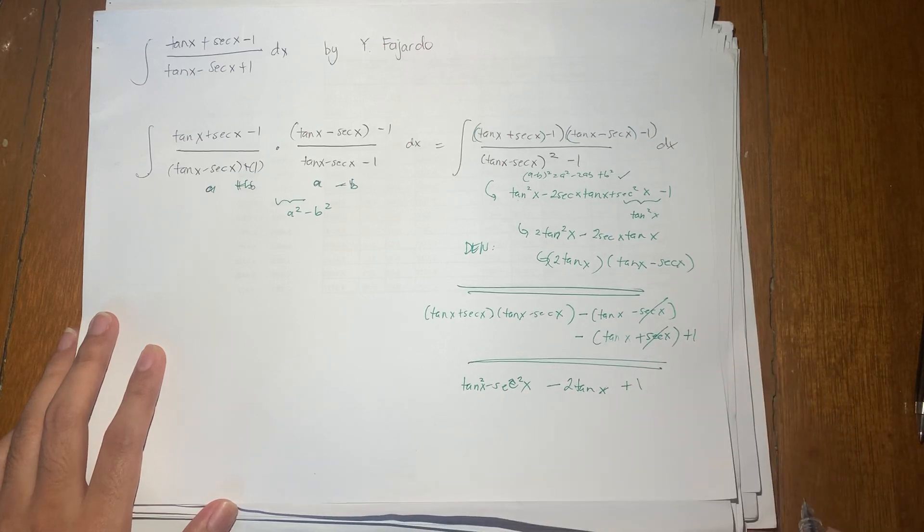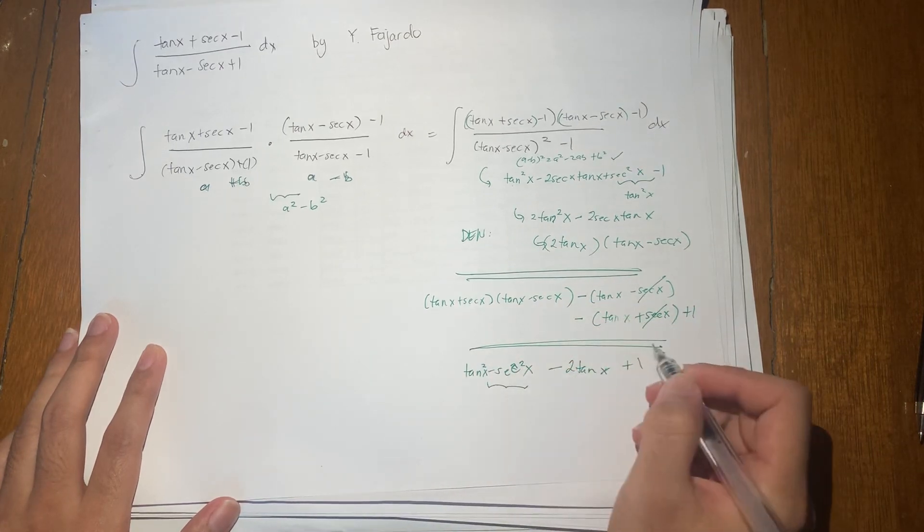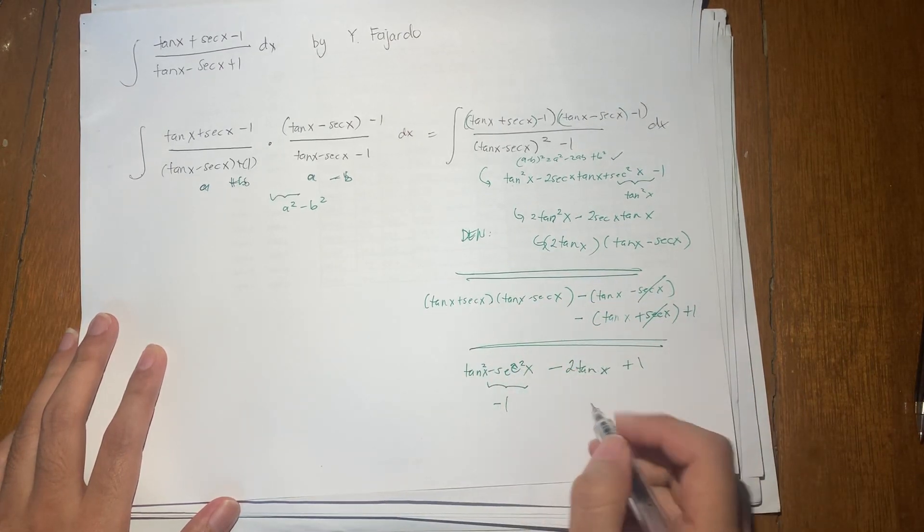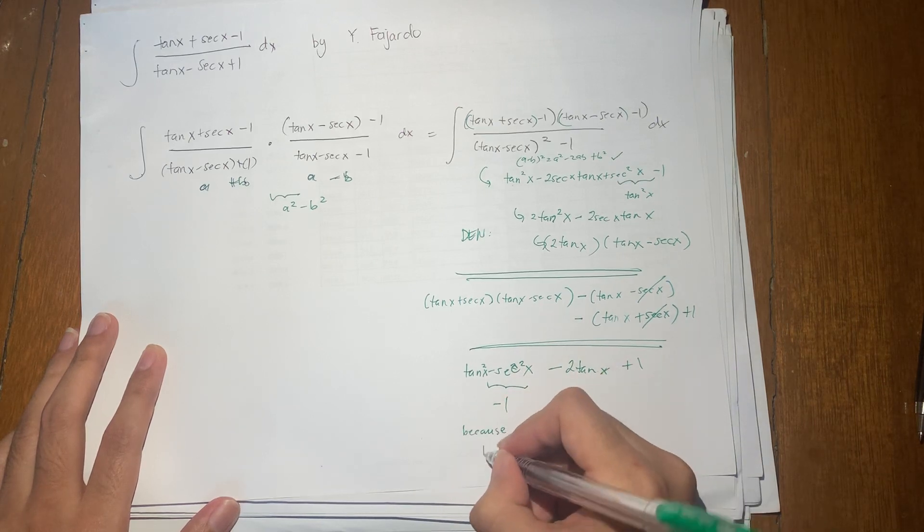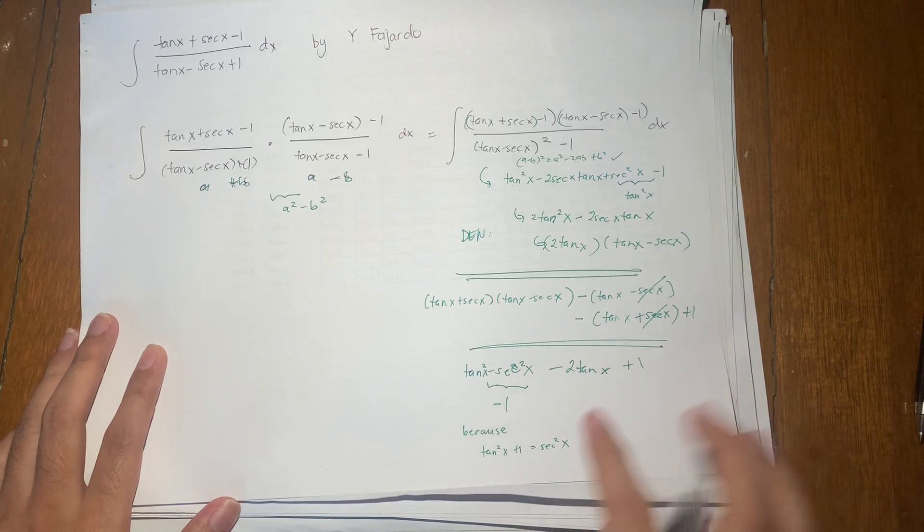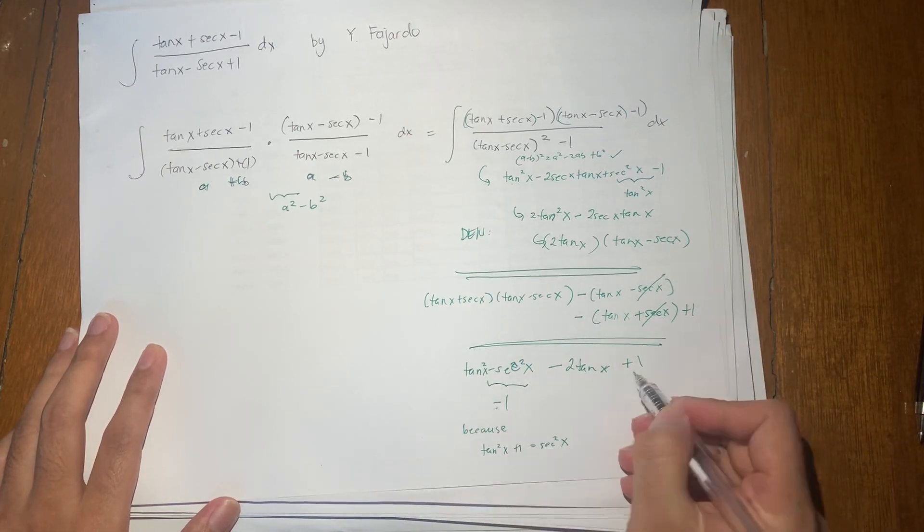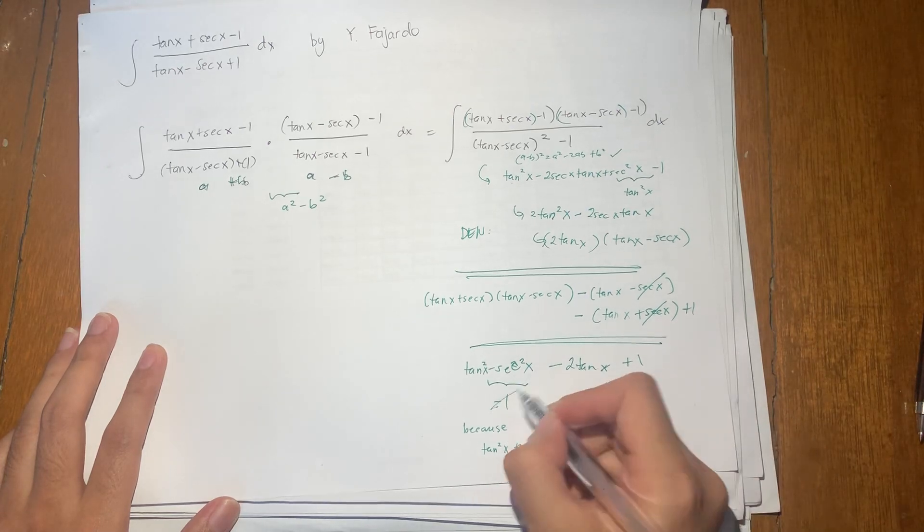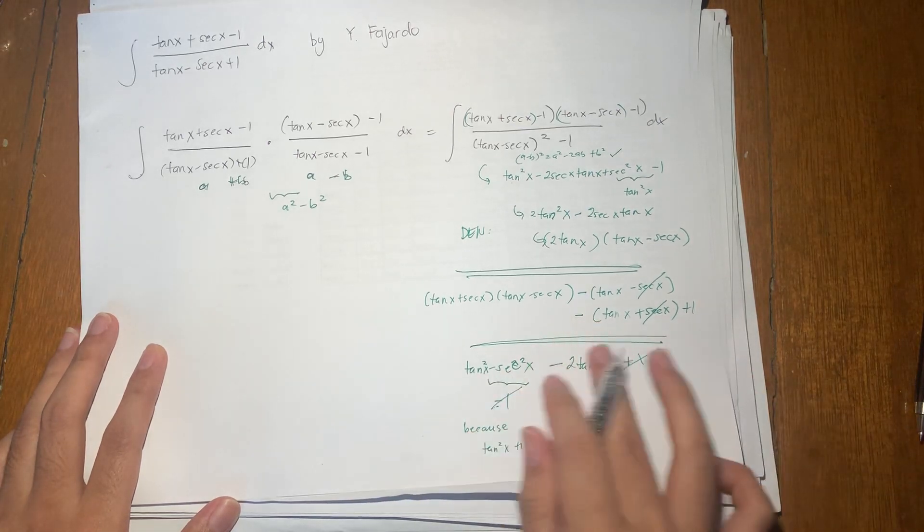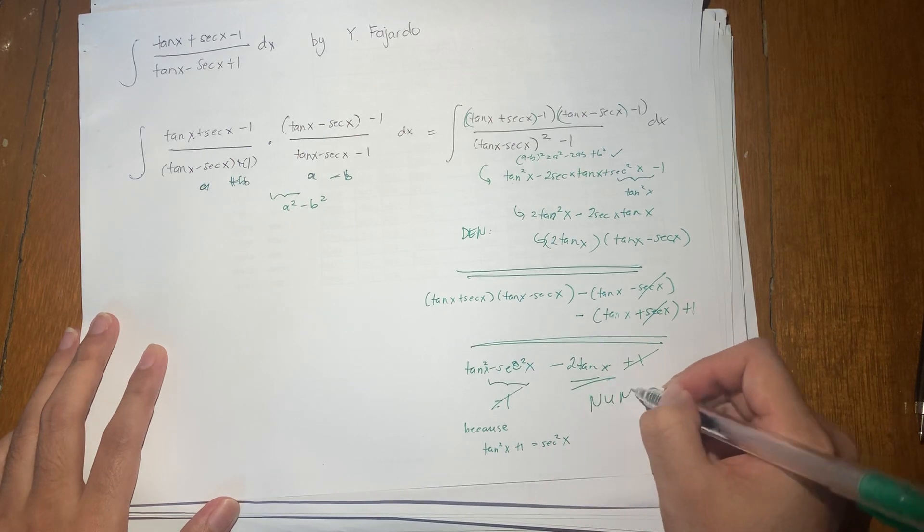So plus 1 here. But again, using the Pythagorean identity we used earlier, this is just negative 1. Because tan squared x plus 1 is equal to secant squared x. So when I rearrange that, I get negative 1. So negative 1 here, then positive 1 here, it cancels out. So what you're left with in the numerator is negative 2 tangent x.